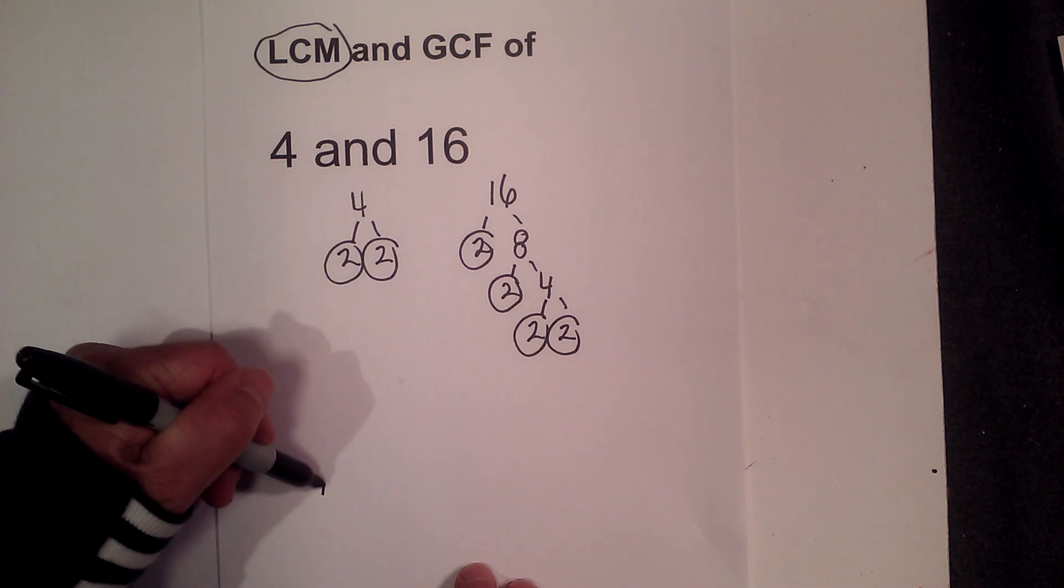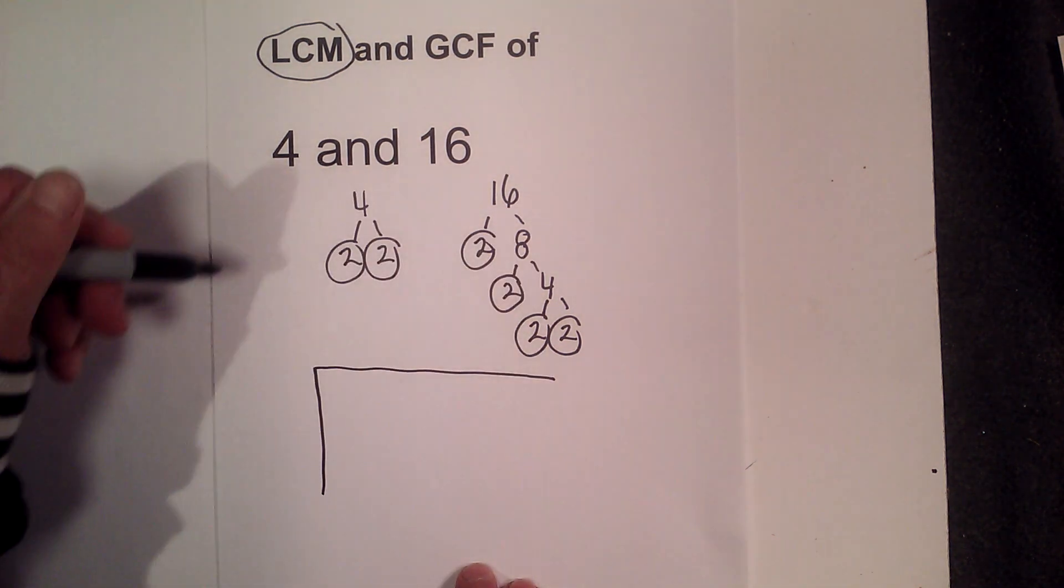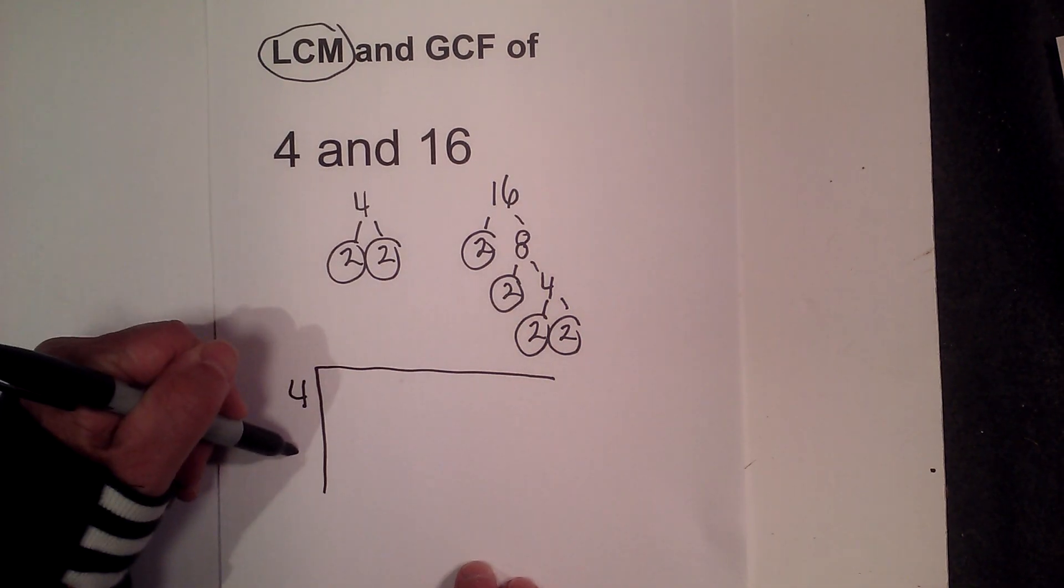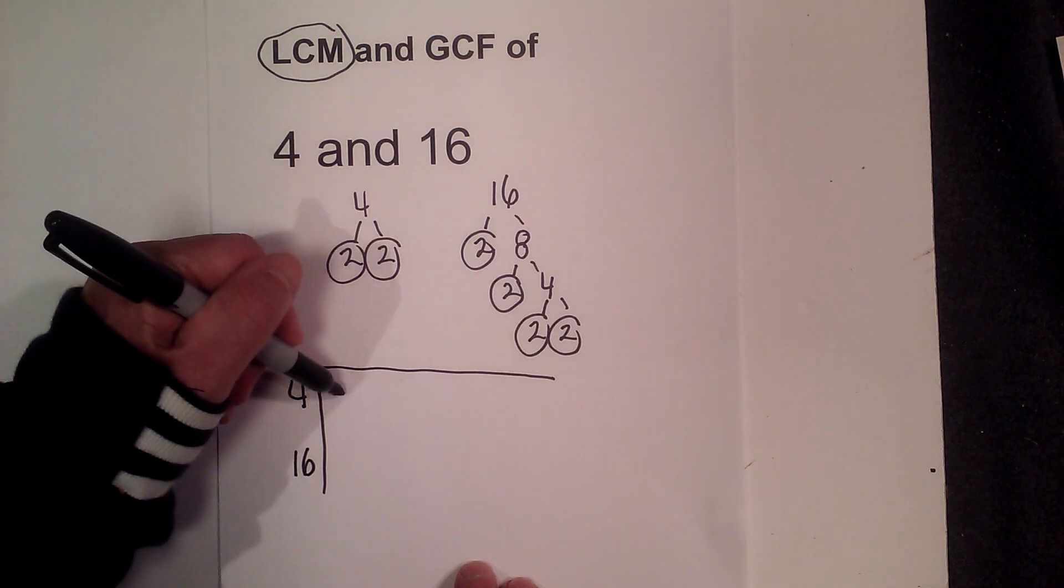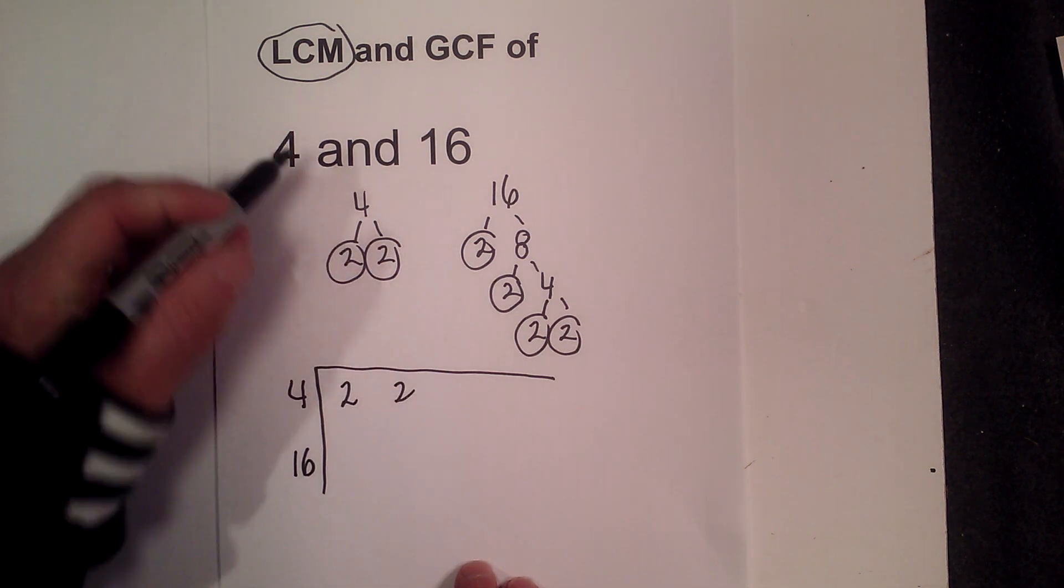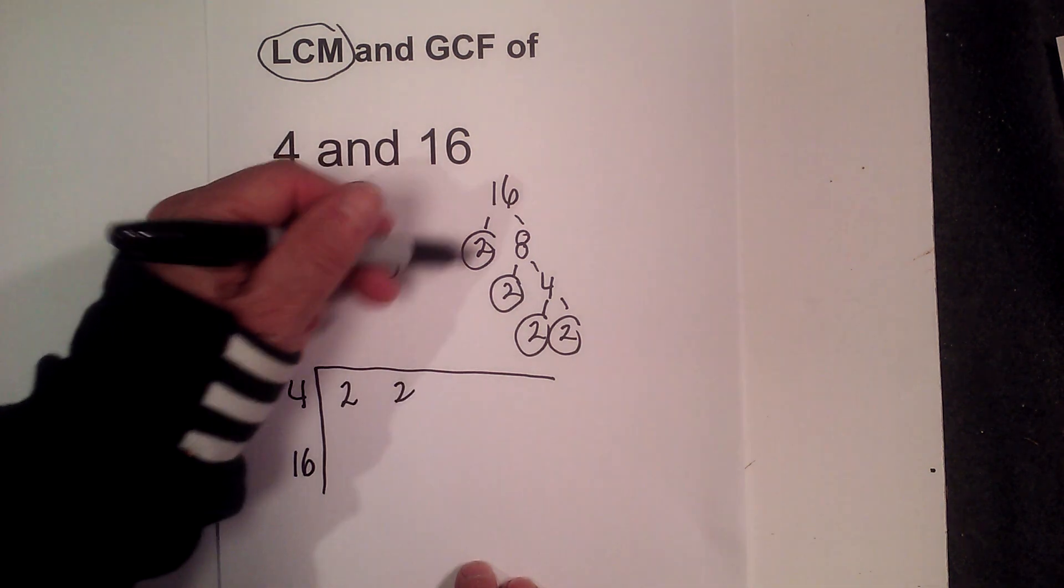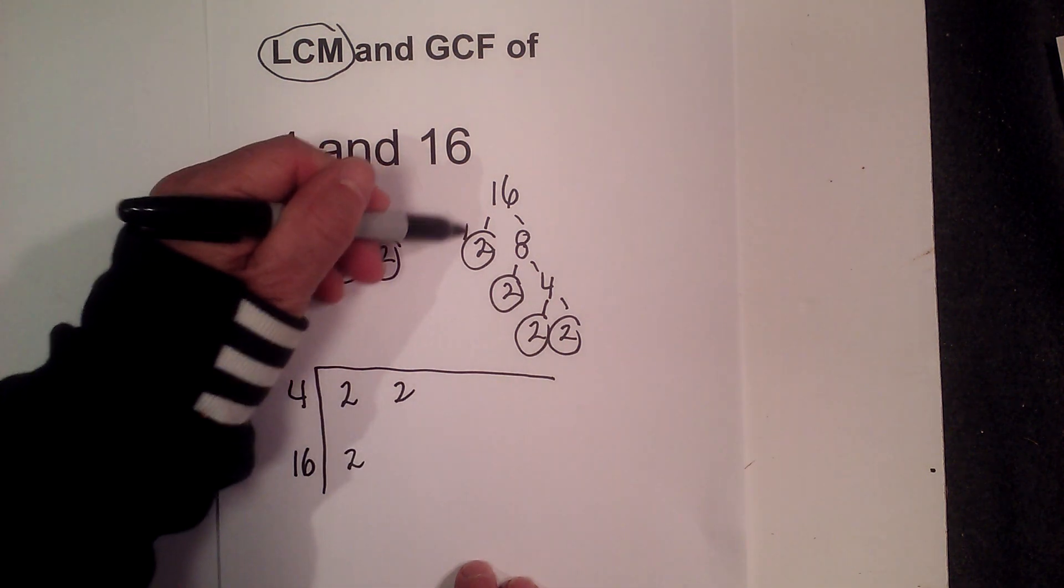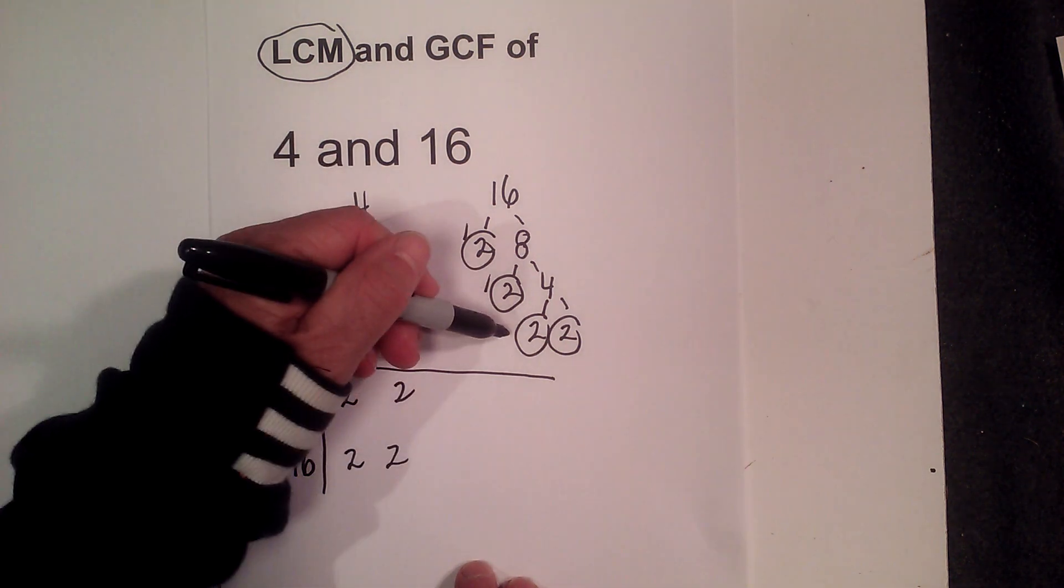Now what I like to do is create a factor chart. I'm going to slide this up just a little bit. So I have 4 and 16, I'm just going to write the factors for both of them. Factors for 4, 2 and 2, and then for 16 we have 2, I'm going to put a mark by it so I don't make a mistake, this 2 and this 2.